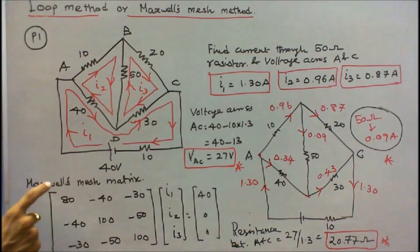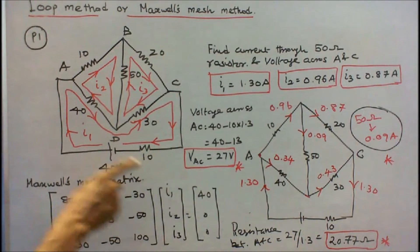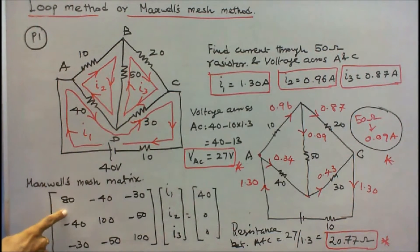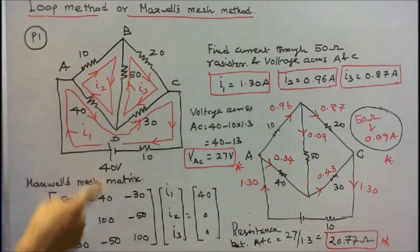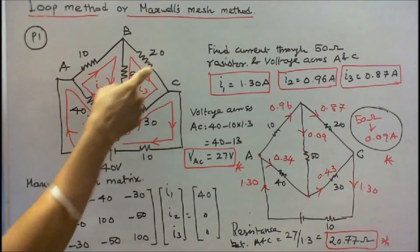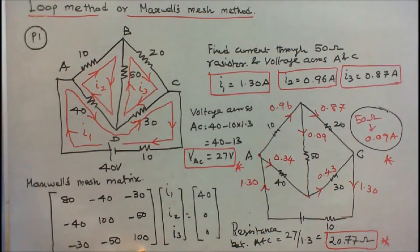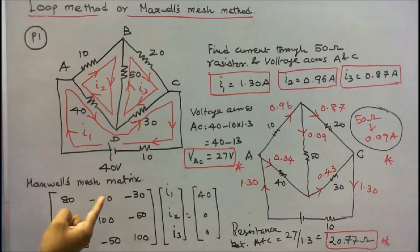First I have to form a Maxwell's mesh matrix. In the matrix, first I have to find the diagonal elements. The first loop resistance is 40 plus 10 plus 30, that is equal to 80. The second loop resistance is 40 plus 10 plus 50, that is equal to 100. The third loop resistance is 30 plus 20 plus 50, that is 100. The resistor common to loops 1 and 2 is 40 ohm, so the off-diagonal element is minus 40.